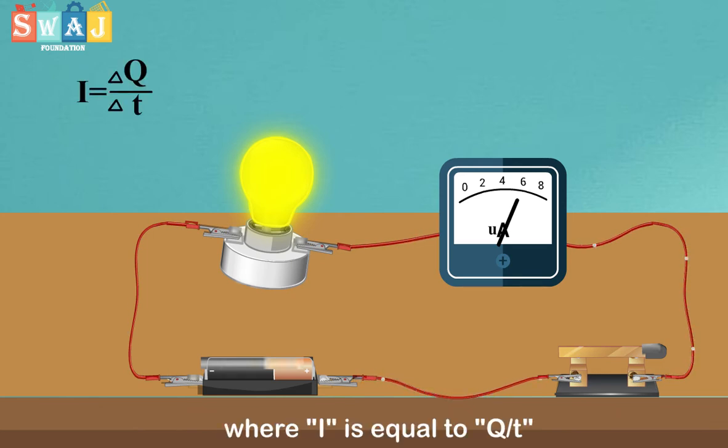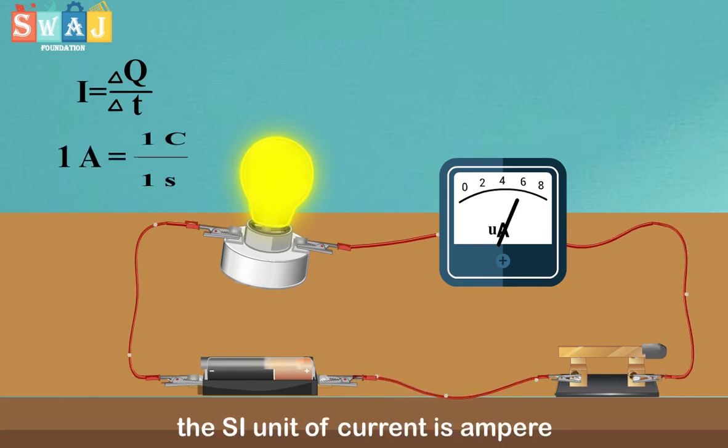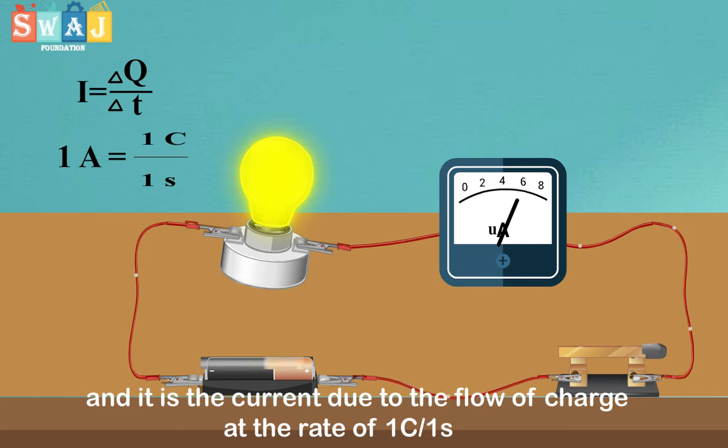where I is equal to ΔQ over Δt. The SI unit of current is ampere, and it is a current due to flow of charge at the rate of one coulomb per second.